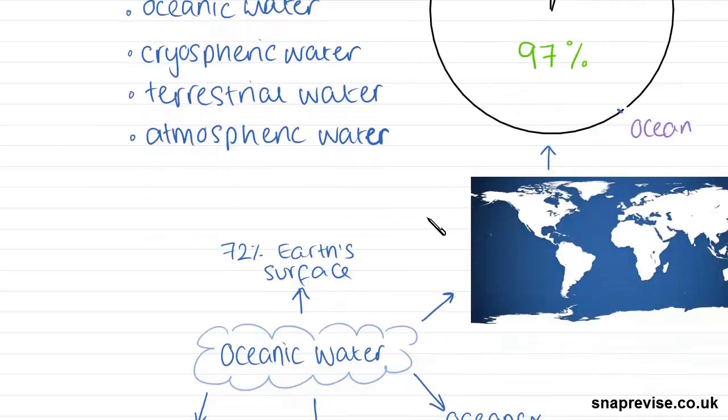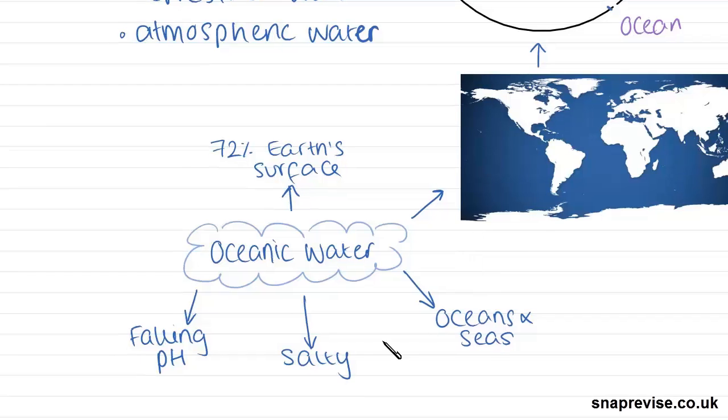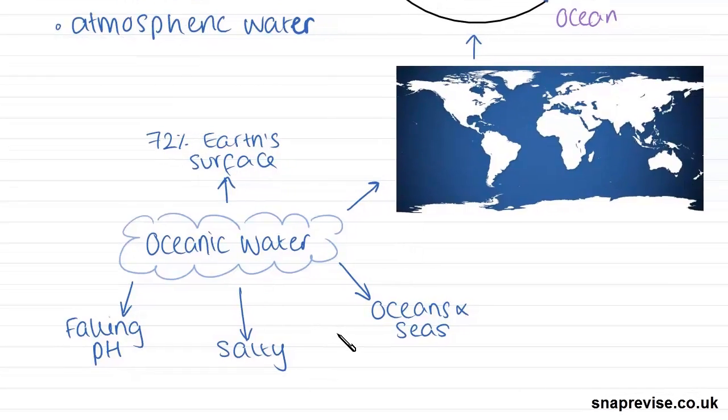So the first store we're going to look at is oceanic water. And as we just learnt, the oceanic store is the largest store of water on Earth and accounts for 97% of the Earth's water in total. Now oceans cover 72% of the Earth's surface. And we can see that in this map of the world here.